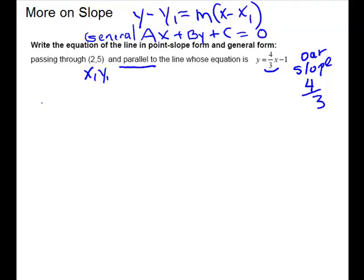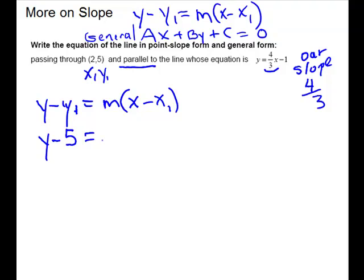So we can plug into the point-slope form. I'll write it first: y minus y₁ equals m times x minus x₁. Then plug in to the subscripts. So we have y minus 5 equals four-thirds times x minus 2.